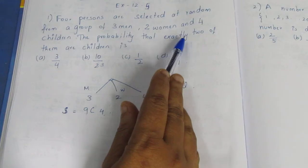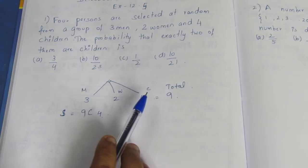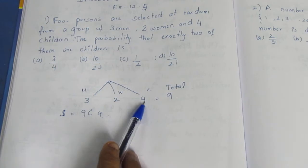The probability that exactly two of them are children. So the condition is that exactly two of them are children.